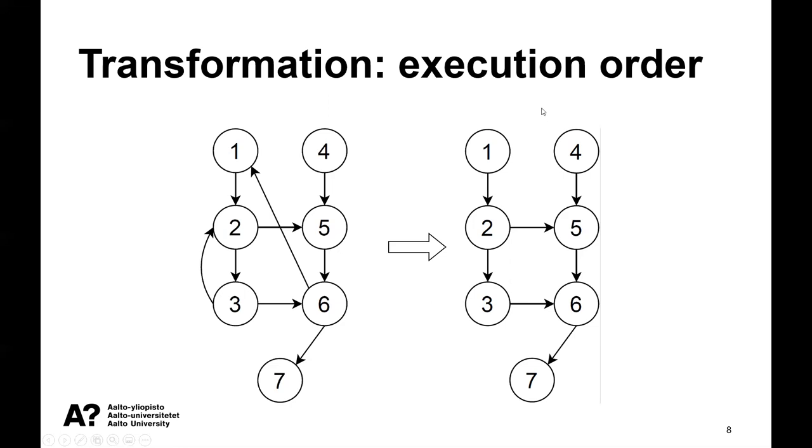Then we remove the loops from this graph and infer the order of the blocks to be executed. There can be several possible topological orders, which is fine. For example, for this graph, there are also several other topological orders. And then, based on this order, we create our system.